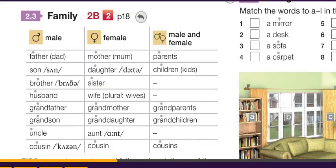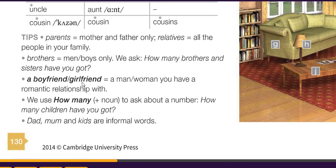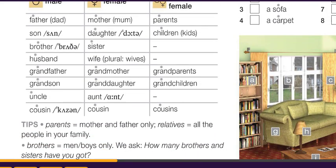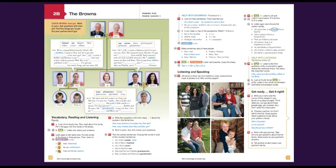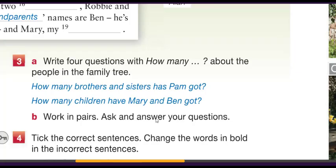A boyfriend or girlfriend is a man or woman you have a romantic relationship with. To ask about a number: 'How many children have you got?' Dad, mum, and kids are informal — people say in the street 'this is my dad, this is my mum, these are my kids.' Now let's move to exercise number three — write four questions with 'how many' about people in the family tree.